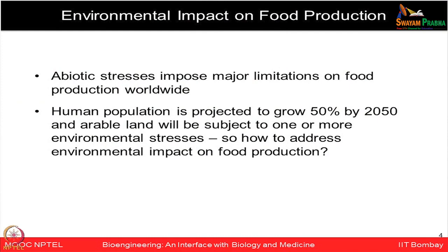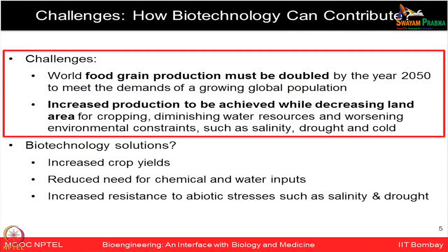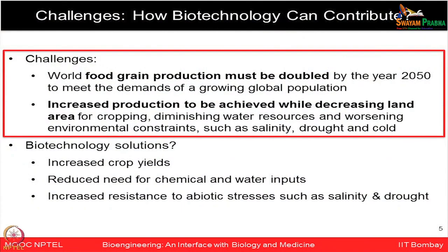The human population is projected to grow almost 50% by 2050, and the land being used for food crop cultivation is getting reduced over time while also being subjected to various environmental stress conditions. The world food grain production must be doubled by 2050 to meet the growing global population's demand. On one hand, water resources are diminishing; on the other, land is being affected by salinity, drought, cold, and many stresses, while we must increase crop productivity on the same small area available.